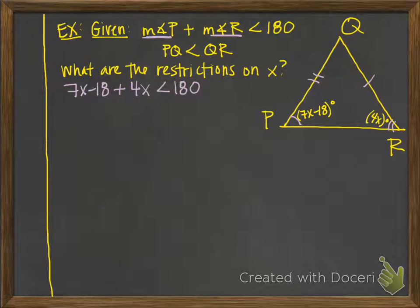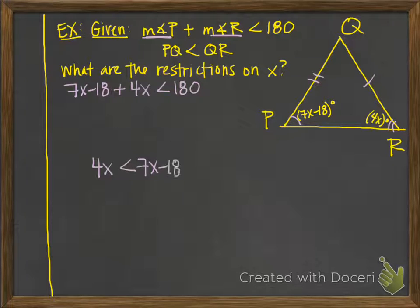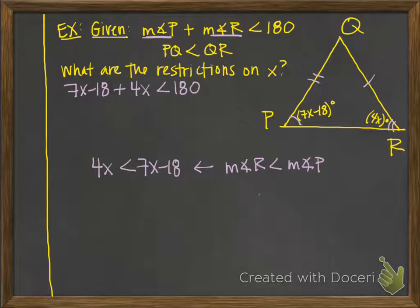We also know that PQ is less than QR. If PQ is less than QR, then the angle across from PQ is smaller than the angle across from QR. The angle across from PQ is angle R, and the angle across from QR is angle P. So angle R is less than angle P, which gives us 4x < 7x − 18.